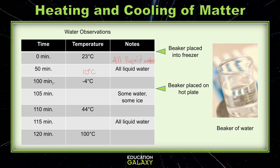After 100 minutes in the freezer, we see that the temperature has dropped all the way to negative four degrees Celsius. Since it's colder than zero degrees Celsius, all of the water must be ice. At this point, we take the beaker out of the freezer and place it on a hot plate. After five minutes, we see that some water exists in the beaker but also some ice, so it must still be at the melting point, which is zero degrees Celsius.